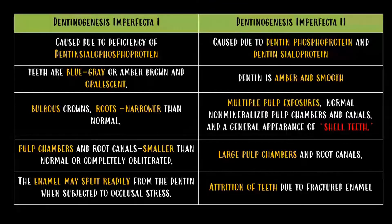Dentinogenesis imperfecta Type 2 is caused due to deficiency of dentin phosphoprotein and dentin sialoprotein. The colour of dentin is amber and is smooth. There are multiple pulp exposures, normal non-mineralised pulp chambers and canals, and a general appearance of shell teeth. Large pulp chambers and root canals are present. Attrition of teeth due to fractured enamel is also seen.